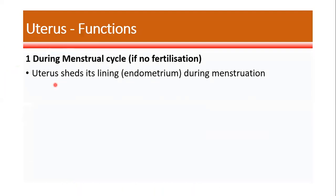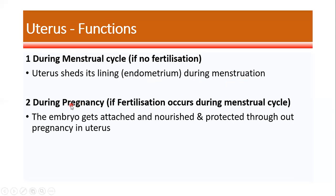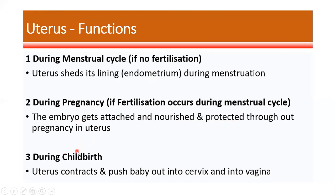What are the functions of the uterus? There are three functions. First, during the menstrual cycle when no fertilization takes place, the uterus sheds its lining — the endometrium — every month during menstruation. Second, during pregnancy, if fertilization occurs, the embryo gets attached, nourished, and protected throughout the pregnancy in the uterus. Third, during childbirth, the uterus contracts and pushes the baby into the cervix and into the vagina.